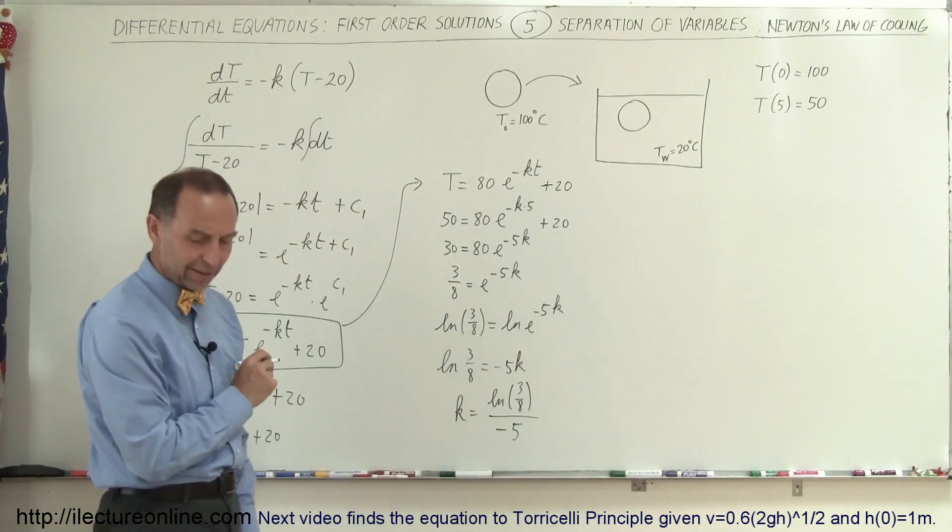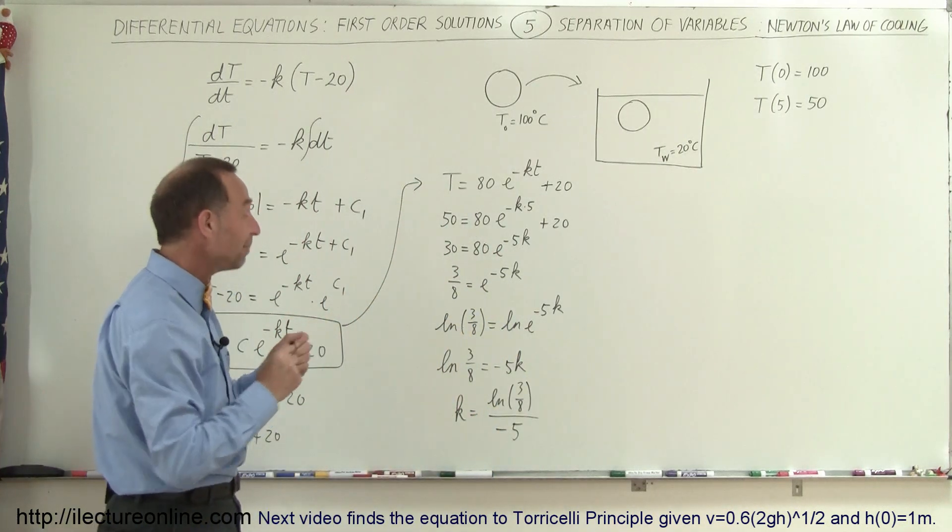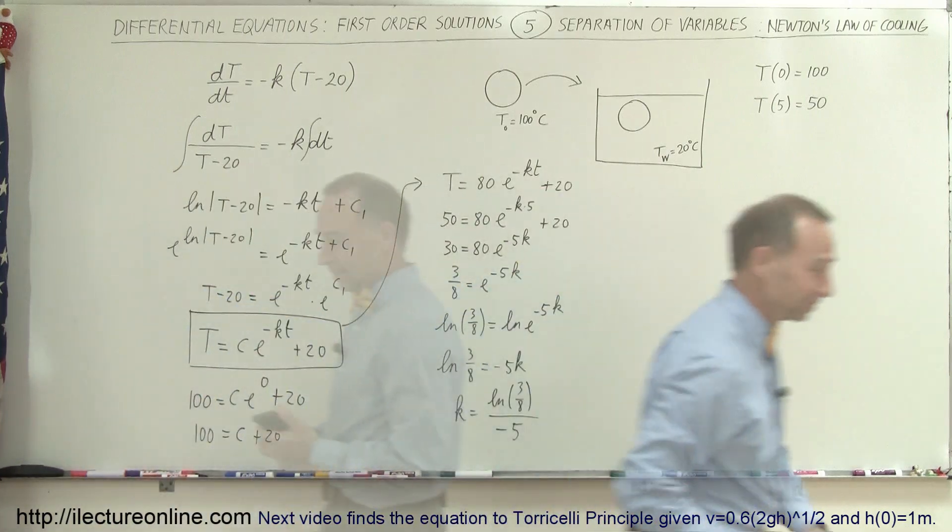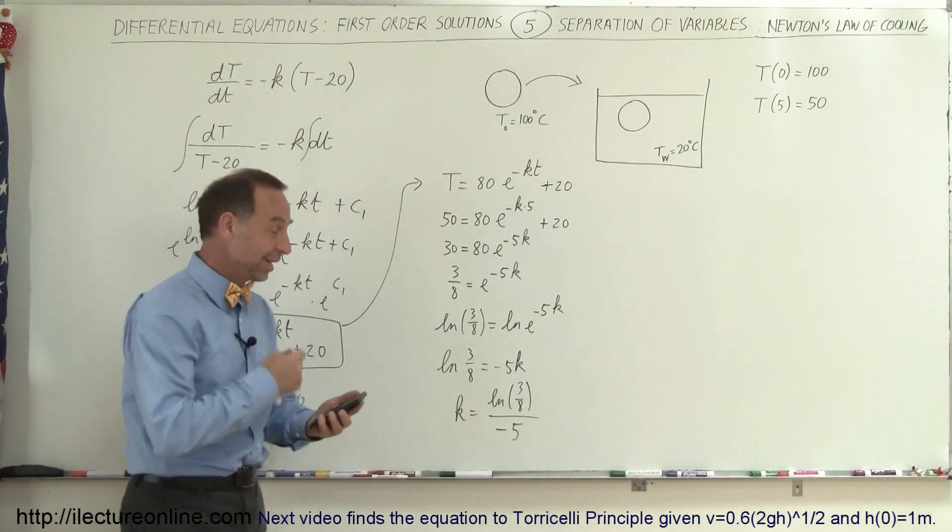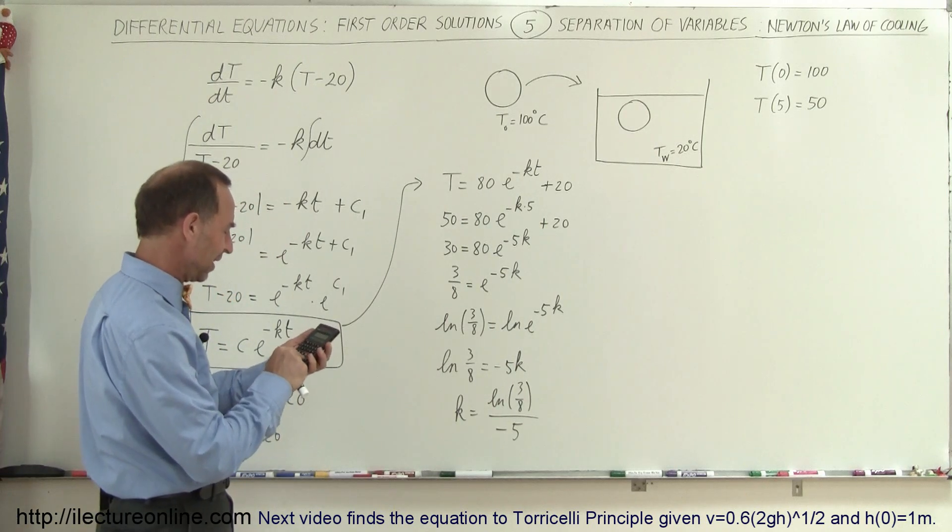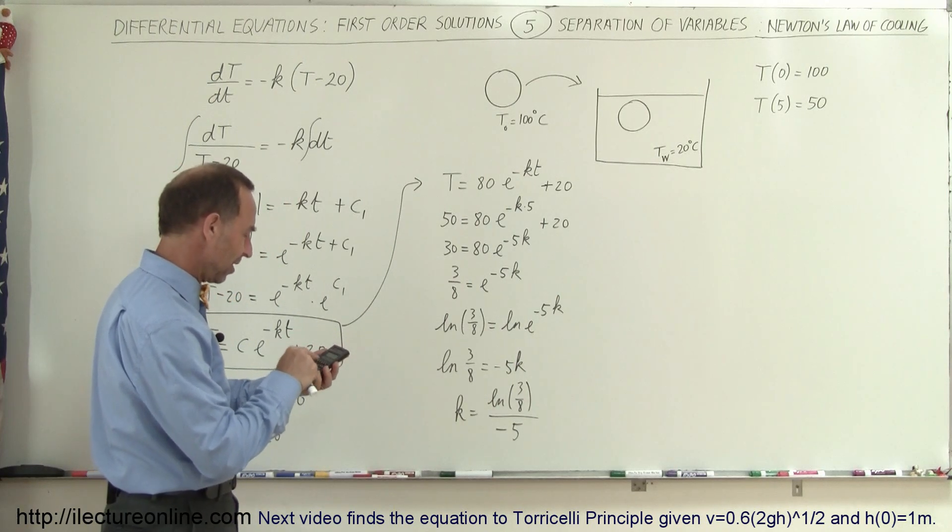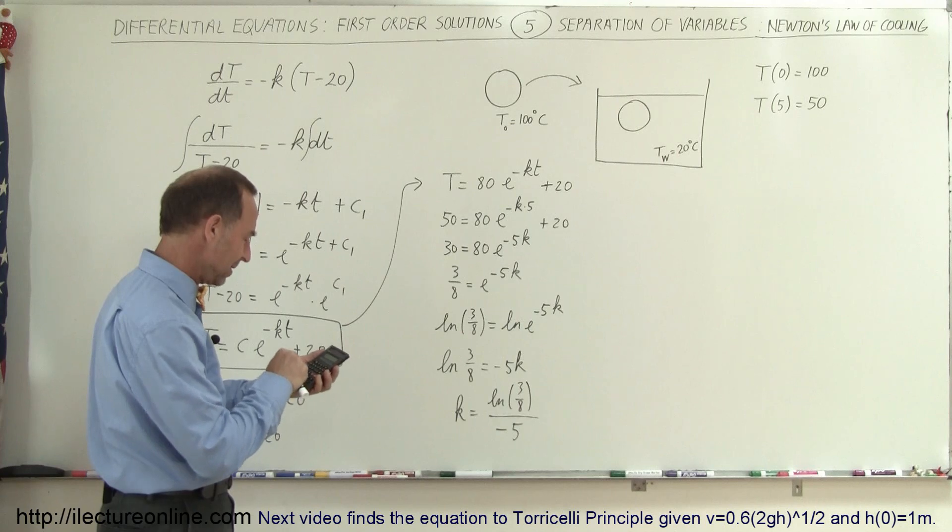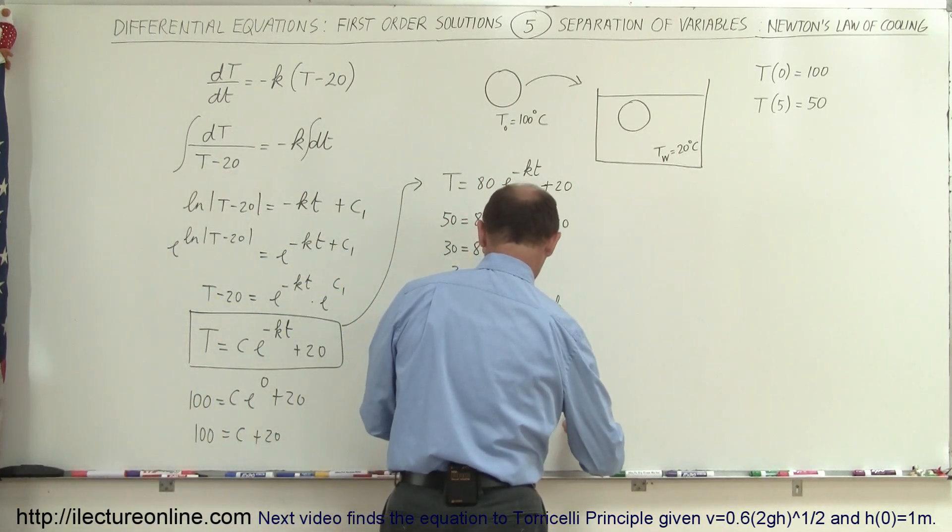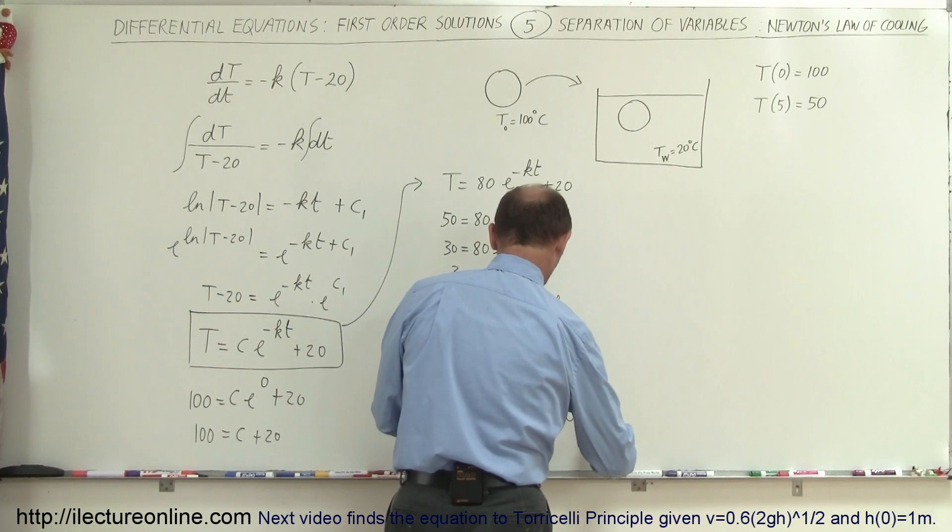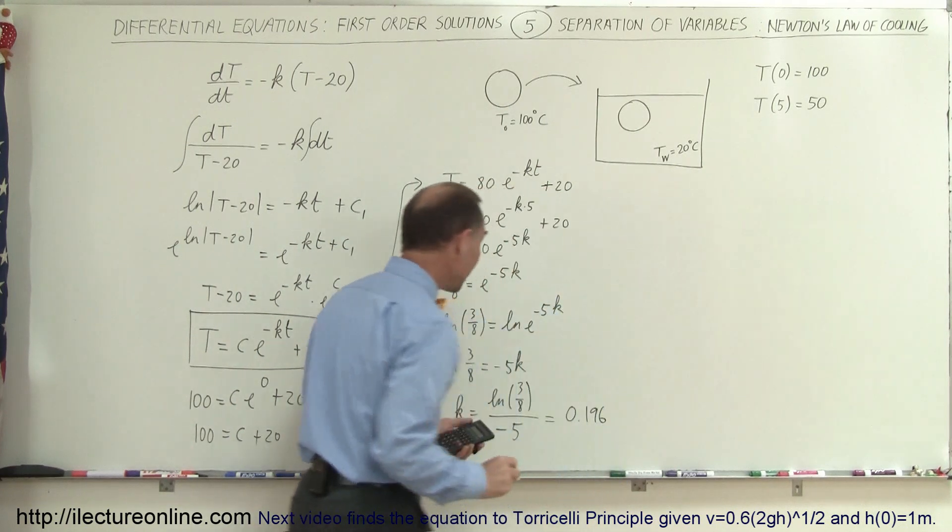I need a calculator for this. Now I'm armed with a calculator, so I can solve this. We have 3 divided by 8, take the natural log of that, divide by negative 5, and I get K equals 0.196.